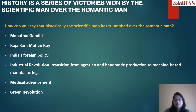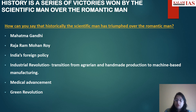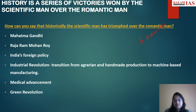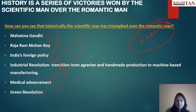Then you come to the main demand of the topic — how historically the scientific man has triumphed over the romantic man. You should give more weightage to this dimension, bringing at least four, five, or six examples from various peers — historians, foreign policy, international events, the industrial revolution, scientific advancements, medical advancement, green revolution, environment, and economy. That's how your examples will be diverse, covering around 2-3 pages of your answer sheet.